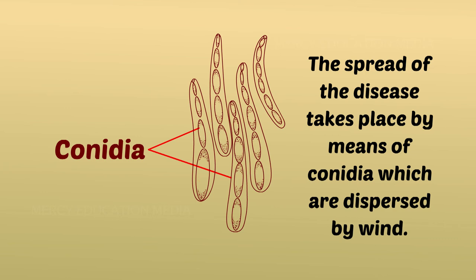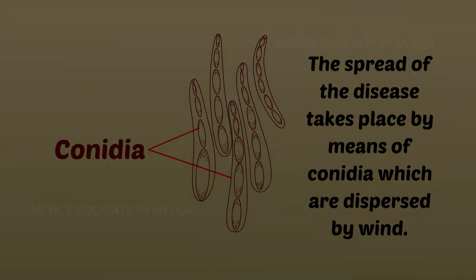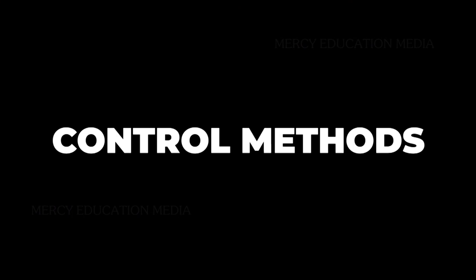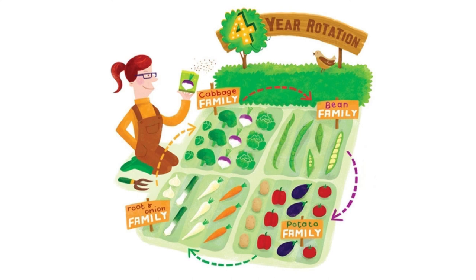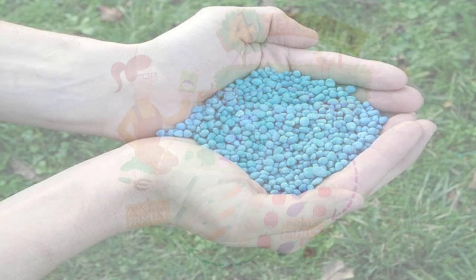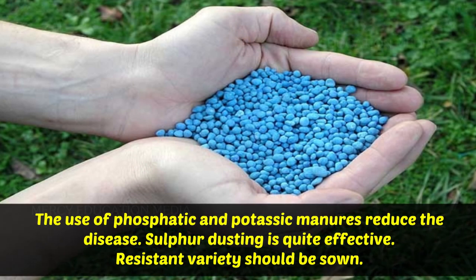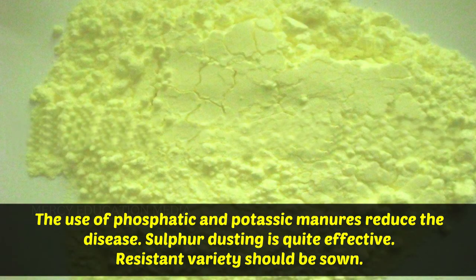The spread of the disease takes place by means of conidia, which are dispersed by the wind. The disease can be controlled by sanitation and crop rotation. The use of phosphatic and potassic manures reduces the disease. Sulfur dusting is quite effective. Resistant varieties should be sown.